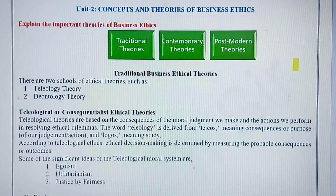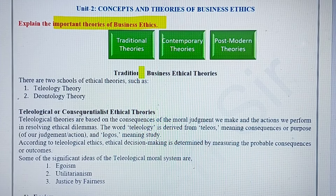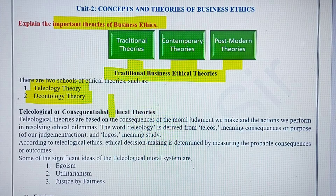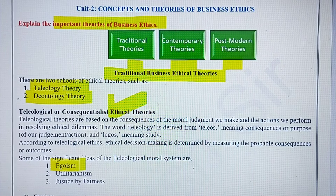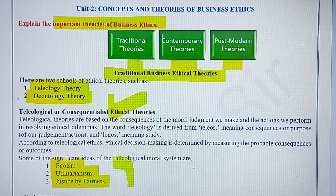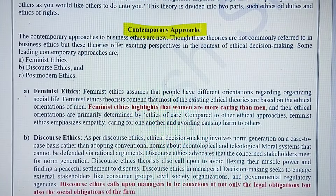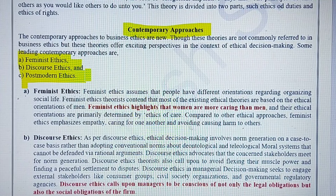The next question is: explain the important theories of business ethics. There are three main categories — traditional theories, contemporary theories, and postmodern theories. Traditional theory is divided into two types: teleology and deontology. Teleology includes features like egoism, utilitarianism, and justice by fairness. In the contemporary approaches, there are again three types: feminist ethics, discourse ethics, and postmodern ethics. You need to understand and learn all of these.